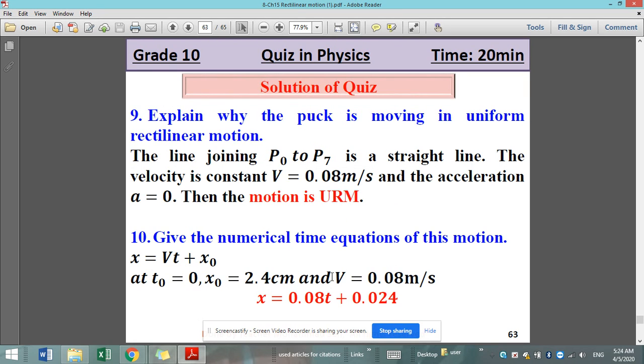Explain why the puck is moving in uniform rectilinear motion. The line joining P0 to P7 is a straight line. So this in the first part justifies why it is rectilinear. The velocity is constant, V equals 0.08 meters per second. And this is showing why it is a uniform motion. The speed is uniform and the acceleration A is 0. Then the motion is URM.